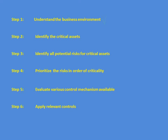To recap: first, understand the business environment; second, identify the critical assets that support that business environment; third, identify the risks for those critical assets; fourth, prioritize all the risks; fifth, evaluate the control mechanisms; and sixth, apply the relevant control mechanism.